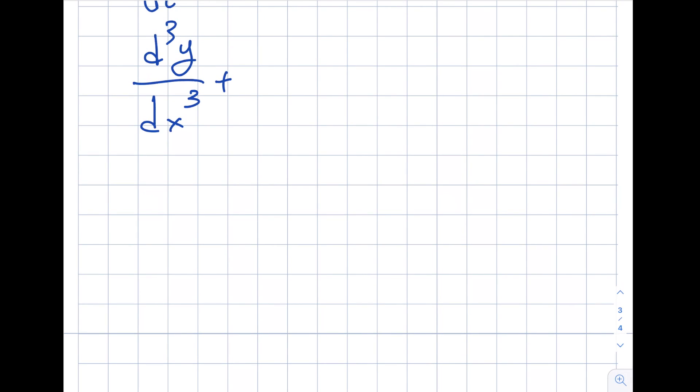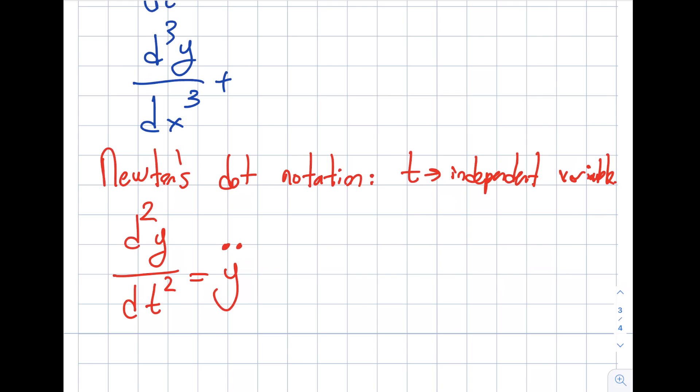The third one is Newton's dot notation. This goes one step beyond the prime notation because I said I'm confused with what the independent variable is. Newton's dot notation is only written with an independent variable of t. That's the only way I write this. For instance, d²y/dt² equals y double dot. It's always t as notation.